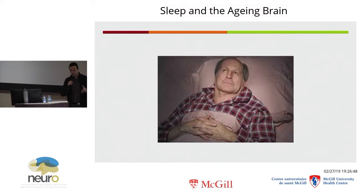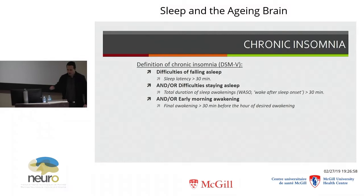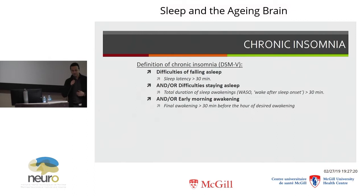Let's start with insomnia. Insomnia is first defined by complaints — problems falling asleep, problems staying asleep, waking up during the night multiple times or for long periods, or waking up too early in the morning. If you just keep these criteria, you might say you have insomnia, and probably most of you would qualify, particularly as you age, because as you age your sleep becomes more fragile and more fragmented.